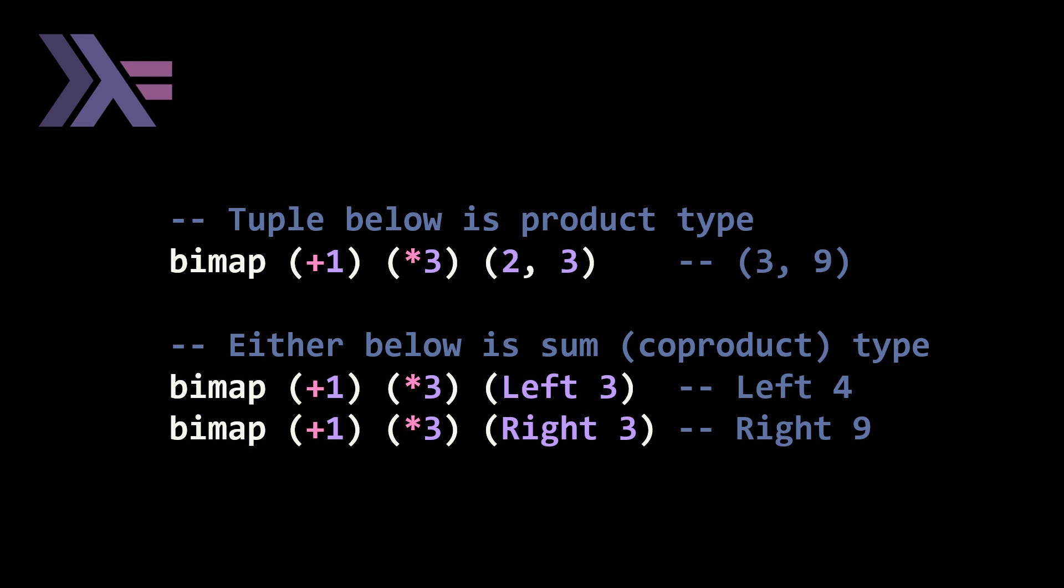So for bimap, we have two unary functions plus one and times three. And when you apply this to the two tuple, aka a pair with the values two and three, you get two plus one, which equals three, and then three times three, which equals nine, which is what you can see on the right.